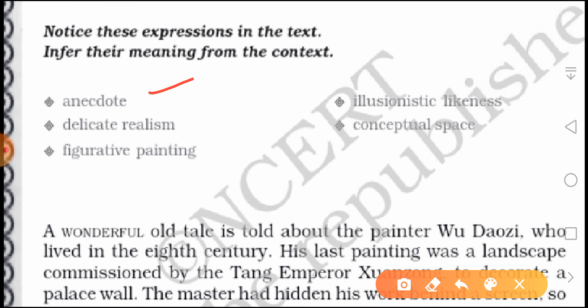Our first term is Anecdote. An anecdote is a short and amusing story about a real incident or a person. For example, to illustrate that honesty is the best policy, I can narrate the story of the woodcutter who lost his axe in the river — the water deity appeared and offered him golden, then silver, then iron axes. Such short and amusing stories are called anecdotes.